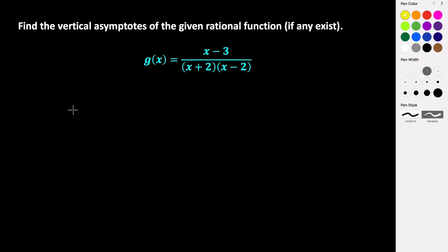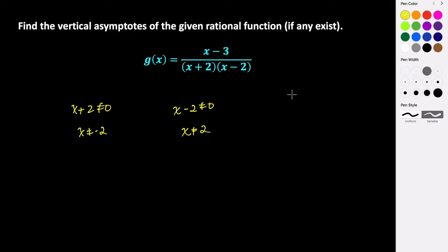We know that x plus 2 cannot equal 0 and x minus 2 cannot equal 0. If we subtract 2 from both sides we get that x cannot equal negative 2. If we add 2 to both sides we get that x cannot equal positive 2. These two together give us vertical asymptotes at x equals negative 2 and x equals positive 2. So we have two vertical asymptotes in this case.